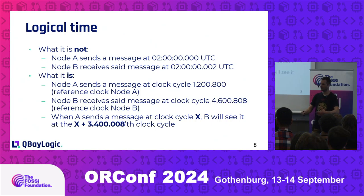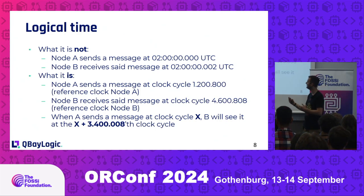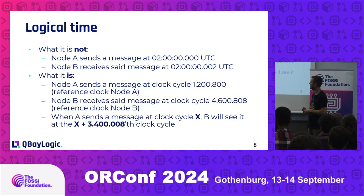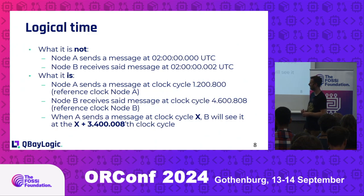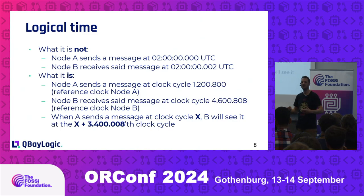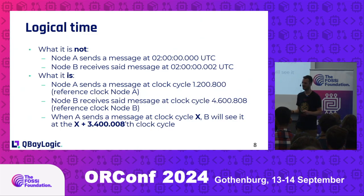An external observer — or the systems can communicate towards a central scheduler — can see that if A sends something at clock cycle X, then we just have to translate that to X plus 3,400,800 cycles later on B. This will be sufficient for any scheduler to figure out when messages will arrive, at clock cycle accuracy.